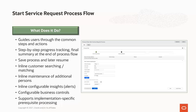At the end of a process flow, a final summary displays key information related to the start service request. A call center agent could save an in-progress process flow. This is useful if a customer does not have all the required information to proceed further at the initial contact.